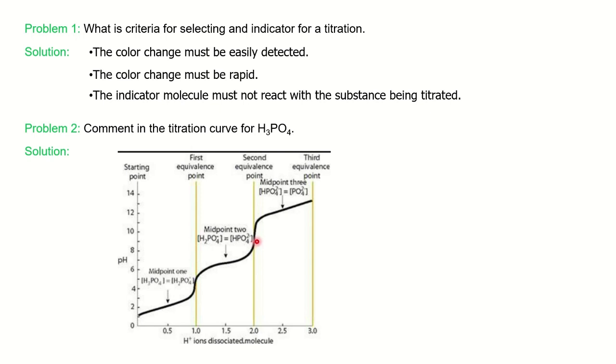And after continuation, you will see there is third buffer zone where the third proton also will dissociate into PO₄³⁻ and you will have the two species in equilibrium at the third midpoint or third buffer zone. And after continuation, entire HPO₄²⁻ will convert into PO₄³⁻. That is your third equivalence point.